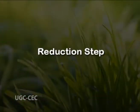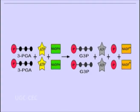In the reduction step, ATP and NADPH which were produced in the light reactions are utilized to reduce the 3-carbon compound PGA formed in the first step.